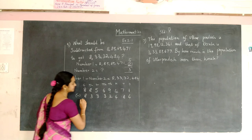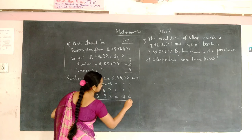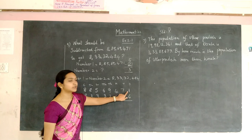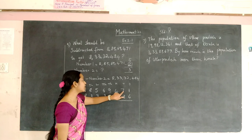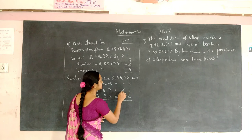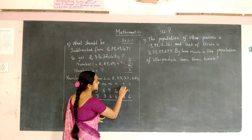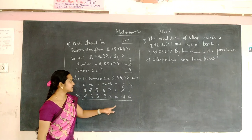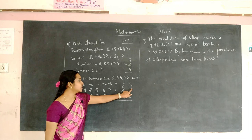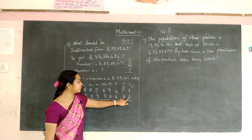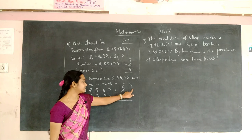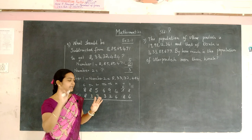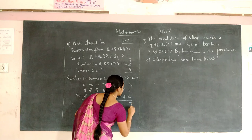We are going to subtract the numbers. We know that 4 is greater than 1, so we cannot subtract. Borrow 1 from 7 — so 7 becomes 6 and 1 becomes 11. Start counting from 4 until you reach 11: 5, 6, 7, 8, 9, 10, 11. So the number is 7.